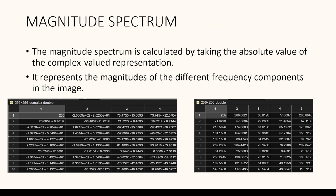The magnitude spectrum is calculated by taking the absolute value of the complex valued representation given in the Fourier transform, and it represents the magnitude of the different frequency components in the image. The magnitude spectrum provides information about the strength, or what we can say the importance, of each frequency component in an image. Here you can see that the complex valued function is converted into its absolute value to represent it in the form of a magnitude spectrum.